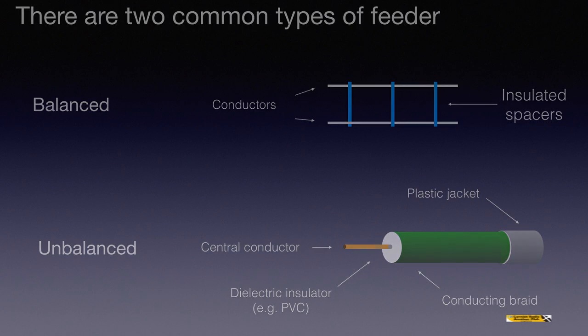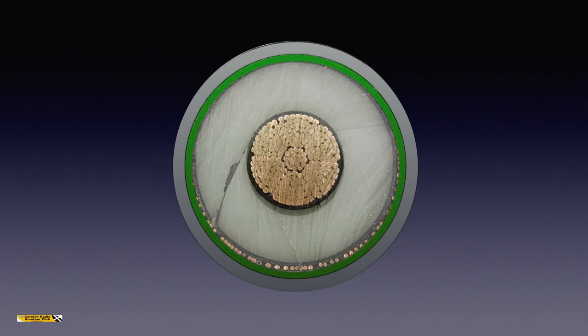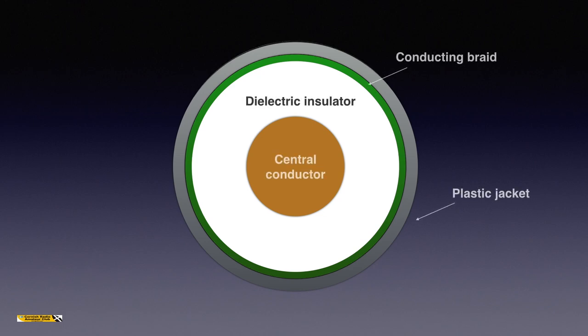If we look at a cross-section of a feeder, it'll look something like this. In graphic form, the various layers are shown: the central conductor in the middle, the dielectric insulator, the conducting braid, and the plastic jacket. The two conductors are the central conductor and the conducting braid.